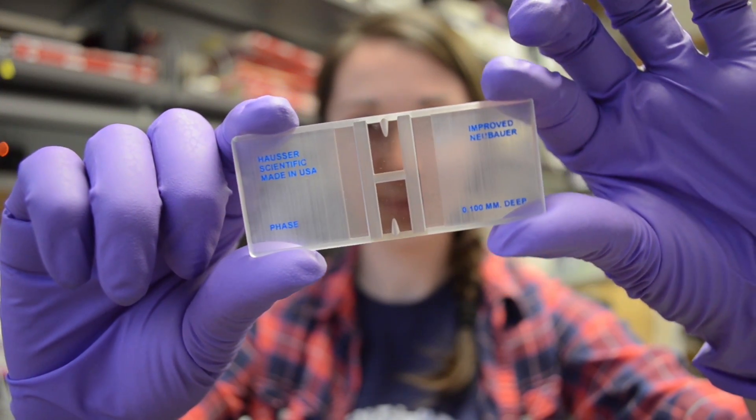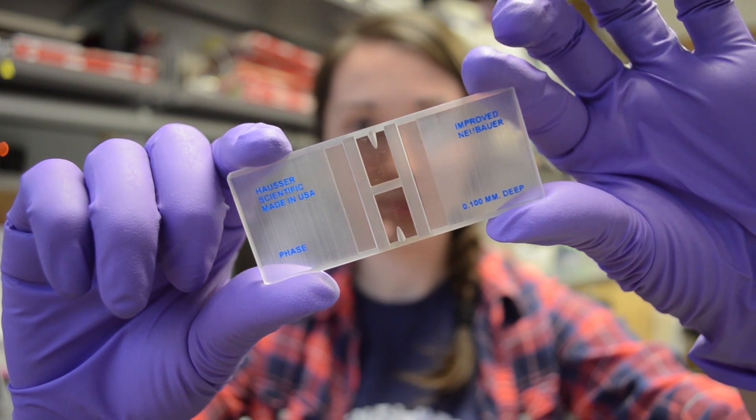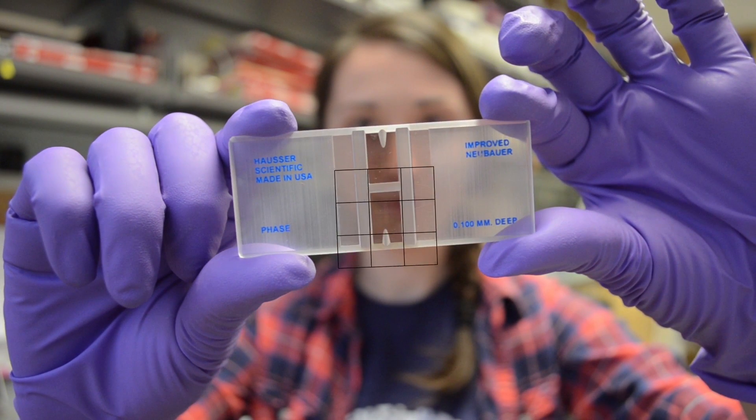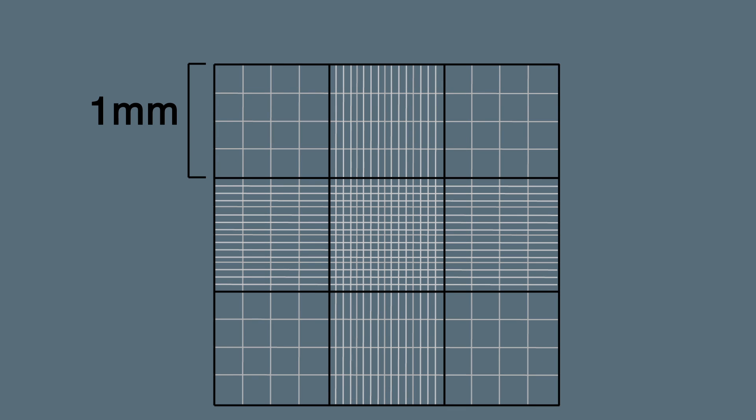The hemocytometer is a thick microscope slide with two counting chambers on reflective sections. Each chamber is divided into nine main squares with a series of etched lines. These squares are one millimeter by one millimeter, or one millimeter squared.